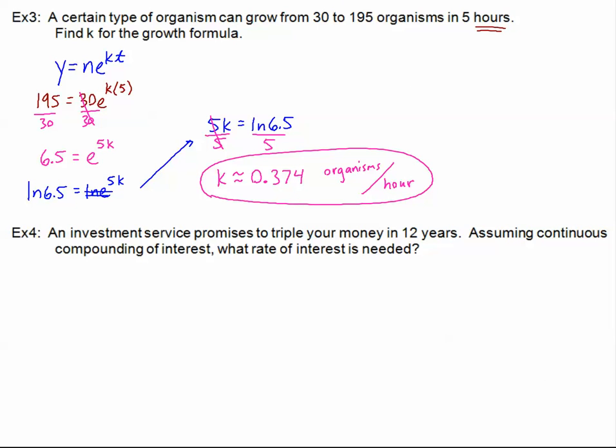Let's look at example four. We have an investment service and they promised to triple our money in 12 years. Well, that's fantastic. In the previous two examples, we were doubling in just under 12 years. So tripling in 12 years, I would definitely take this. It says, assuming continuous compounding of interest, there's that buzzword, continuous, what rate of interest is needed. Since I know that we're continuous, I know that it's the PERT. A equals PE to the RT.